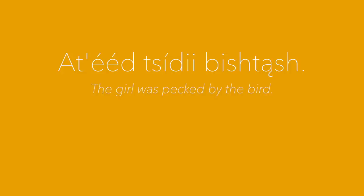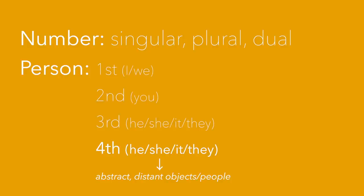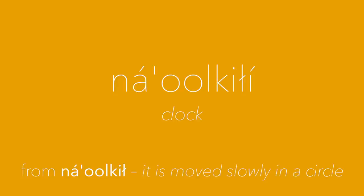So 'the girl was pecked by the bird' is the correct word order, but not 'the bird pecked the girl.' However, the noun is not the main thing — the verb is the king. In Navajo, a verb can form a complete sentence as it transmits almost all the information, including number (of which there are three: singular, plural, and dual), and person (of which there are four — the fourth person is for some abstract or distant objects or people). The verb can also express notions for which English uses adjectives; for example, there is a verb that means 'to be large.' And loads of nouns are derived from verbs — for example, 'clock' is derived from a word meaning 'it is moved slowly in a circle.'